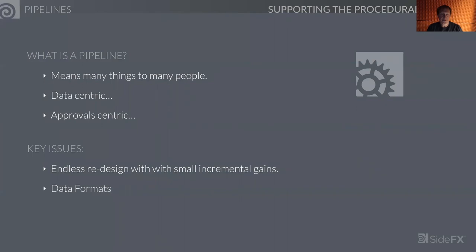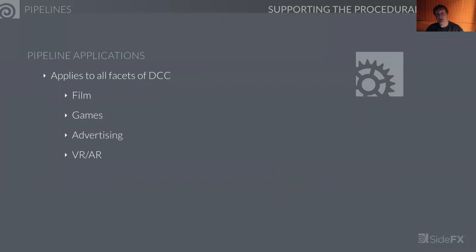So it all comes back to: what is a pipeline? Pipelines mean many things to many people — are they data centric, approval centric? I'm not going to show a single pipeline diagram because that's not the real key issue. The real issue is facilities and users' endless redesign of pipelines with small incremental gains. There was a lot of focus on data formats and approvals, but nothing revolutionary has really changed in the last number of years.